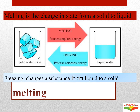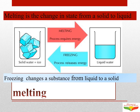What is the melting point? Each pure substance has a temperature at which it changes from solid to liquid — this is called the melting point. For example, table salt freezes and melts at the same temperature, which is 801 degrees Celsius.